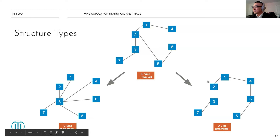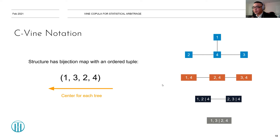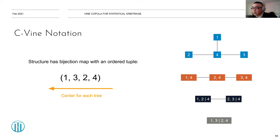C-vine notation is important if you want to code the module yourself. A C-vine is represented as an ordered tuple — for example (4, 2, 3, 1) means node 4 is the center at the first tree level, so connections are (1,4), (2,4), (3,4). At the second level, node 2 and the previously conditioned node 4 form the center, and so on. An R-vine notation becomes a full upper triangular matrix, which would take another ten minutes — so we'll focus only on C-vine structures today.